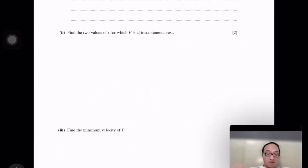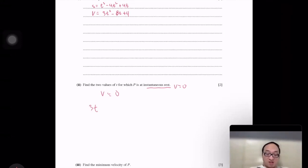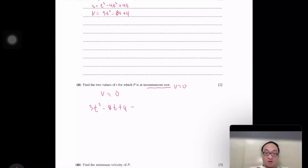Find the two values of t for which P is at instantaneous rest. That means instantaneous rest means velocity equals zero. So just make v equals zero. So 3t square minus 8t plus 4 equals zero.